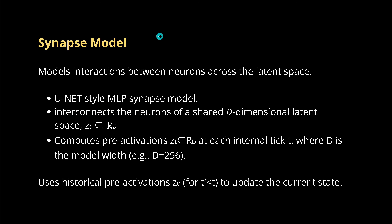We also have the overarching synapse model, which handles interaction between neurons across the latent space. This is a U-Net-style MLP synapse model that interconnects neurons in a shared d-dimensional null space and computes the pre-activation at internal tick t, where d is simply the model width. It uses the historical pre-activation to update the current state.